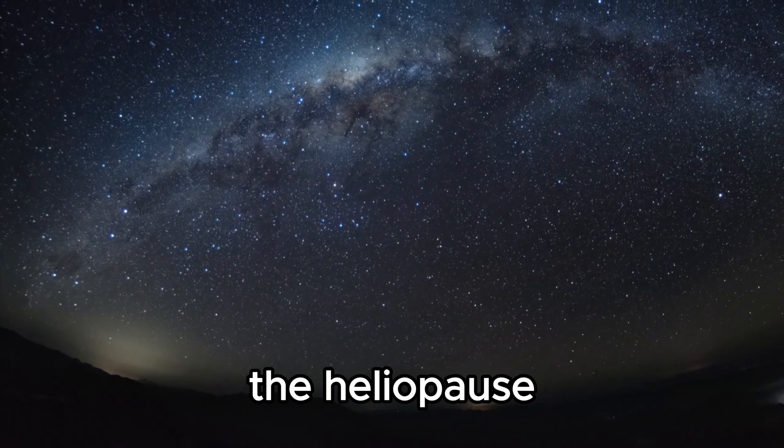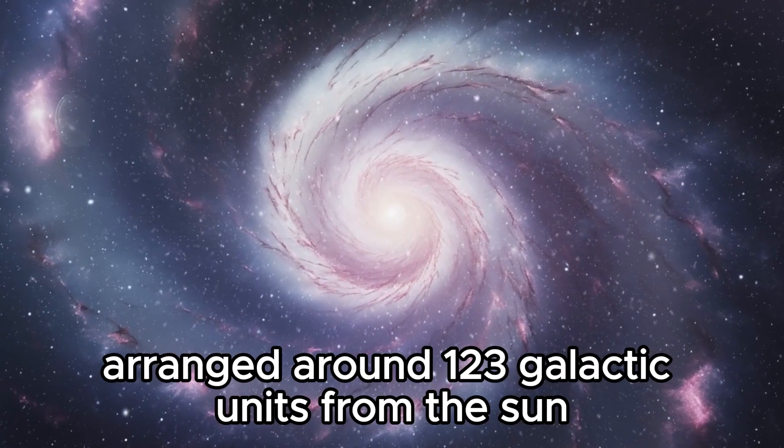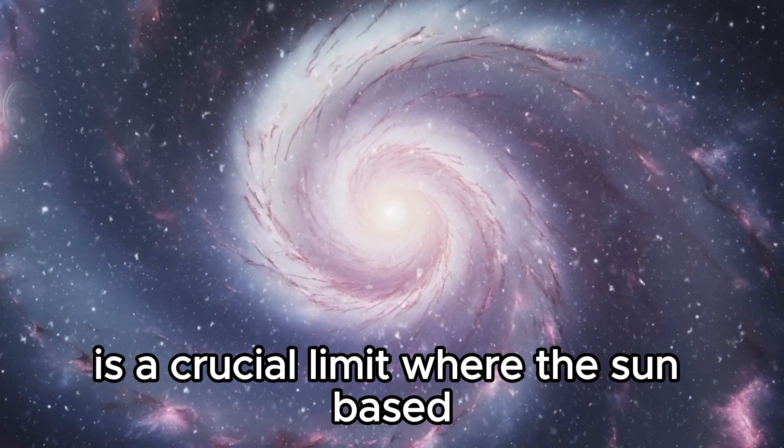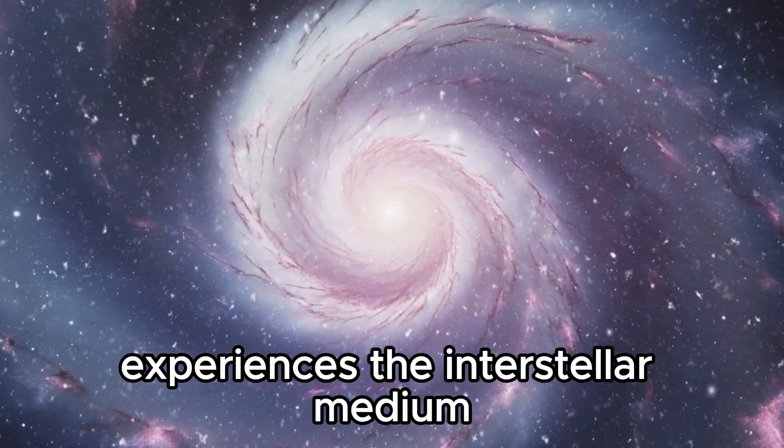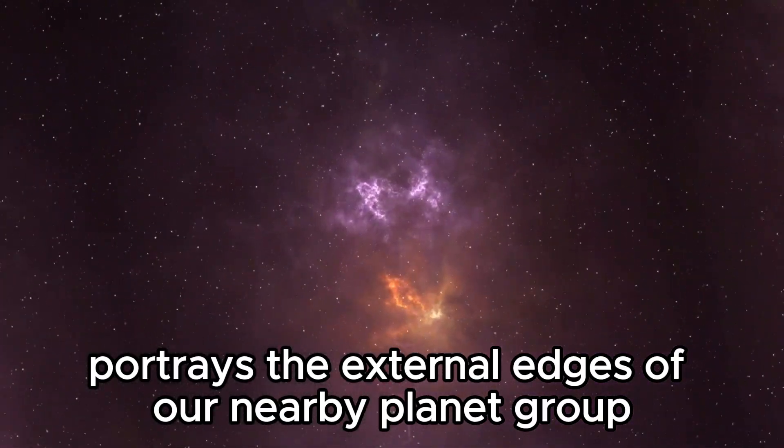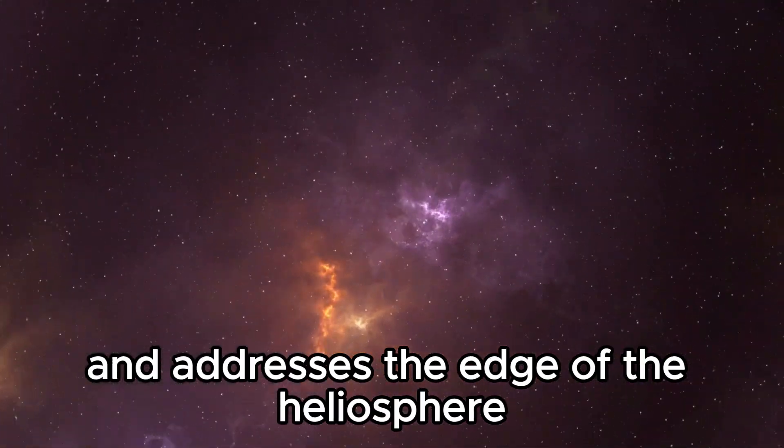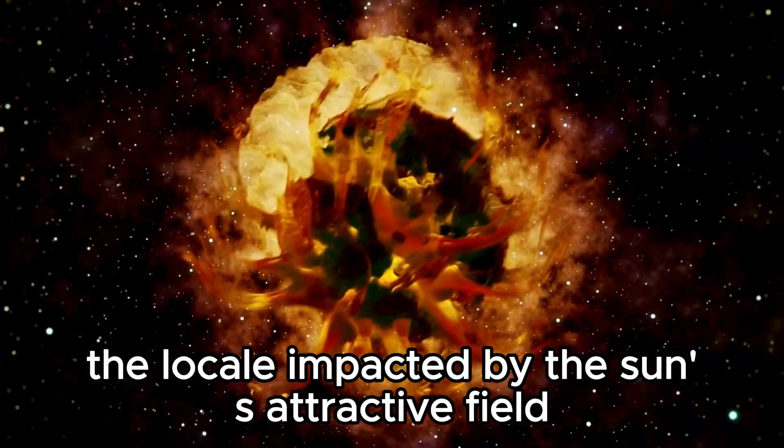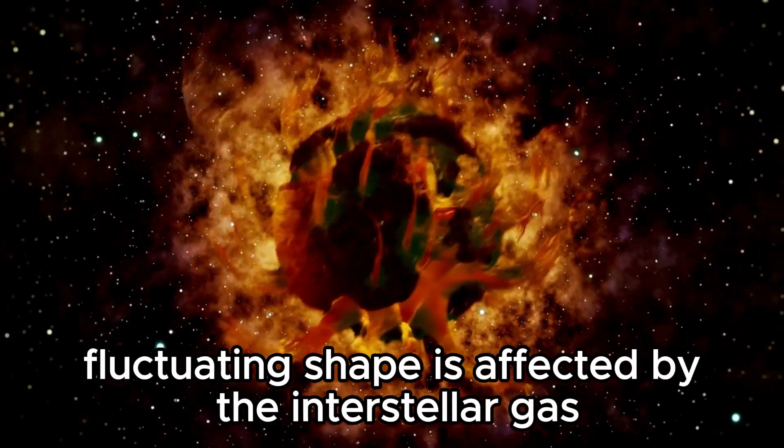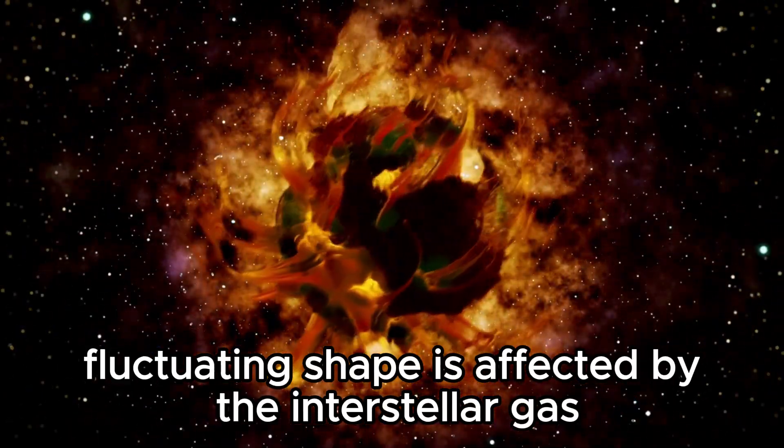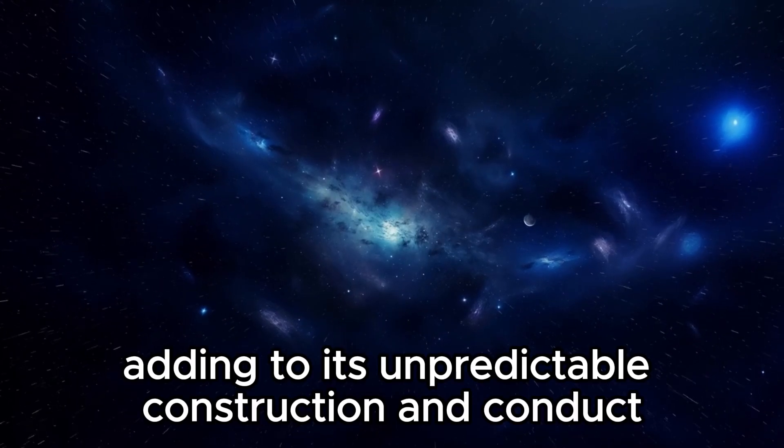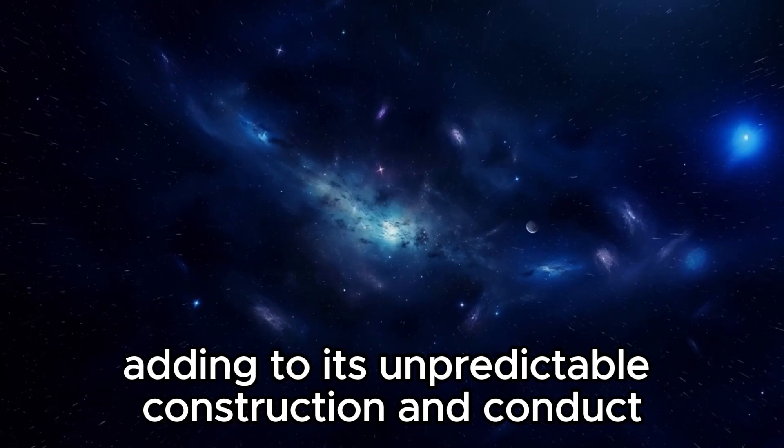The Heliopause, arranged around 123 galactic units from the Sun, is a crucial limit where the Sun-based breeze from the Sun experiences the interstellar medium. This limit portrays the external edges of our nearby planet group and addresses the edge of the heliosphere, the locale impacted by the Sun's attractive field and lively particles. The Heliopause's fluctuating shape is affected by the interstellar gas wind brought about by the Sun's movement through space, adding to its unpredictable construction and conduct.